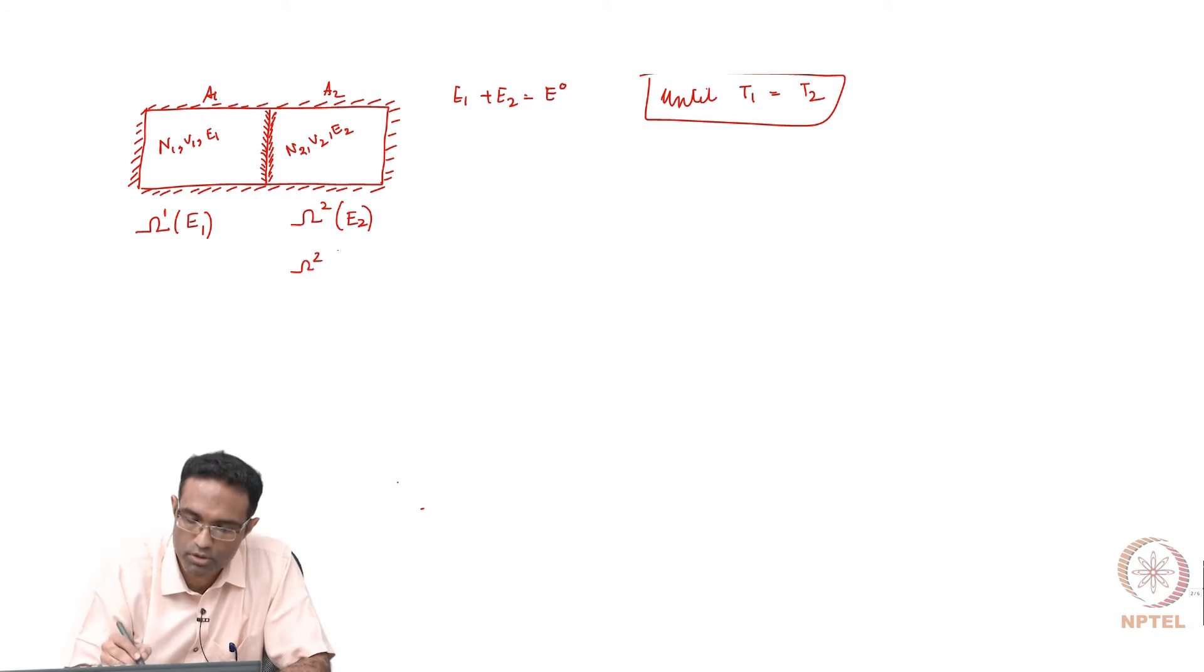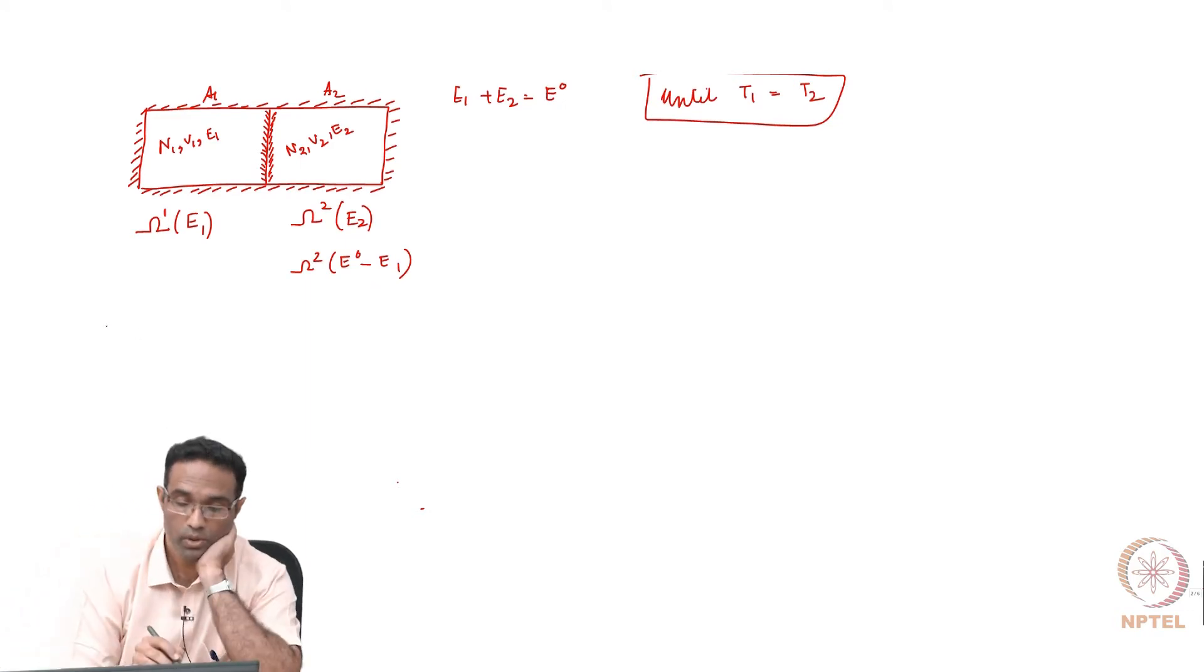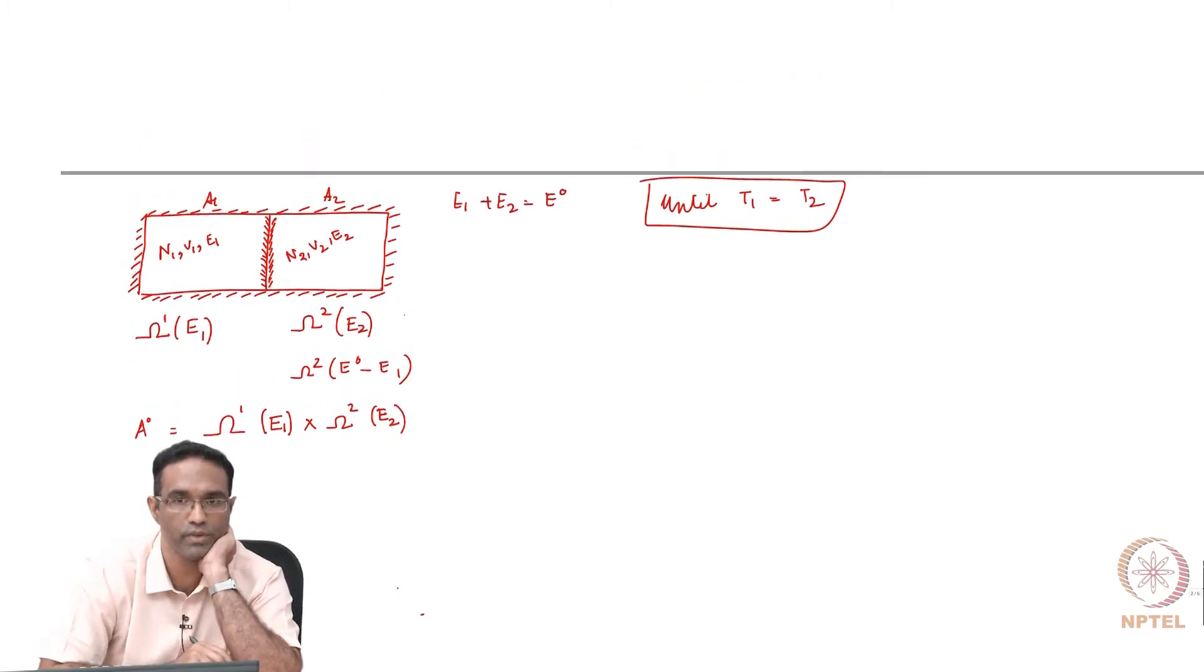It is possible for us to write E naught minus E1 as well. The composite system A1 plus A2, which I will call A naught, can be in how many different ways - you can achieve it in E1 times E2 different ways.